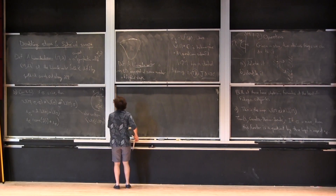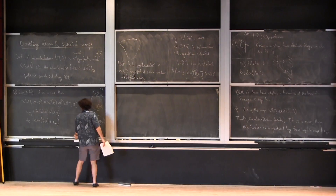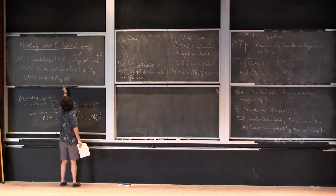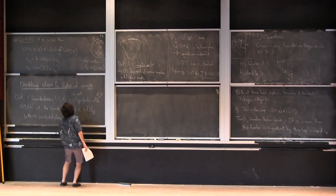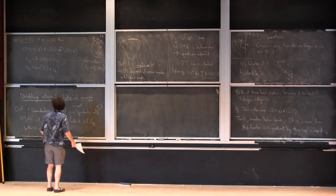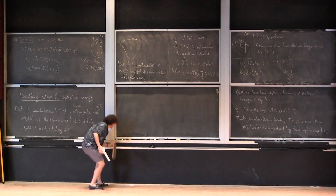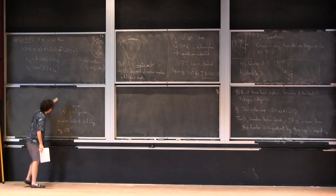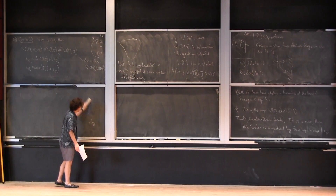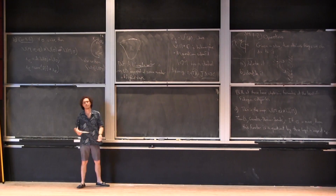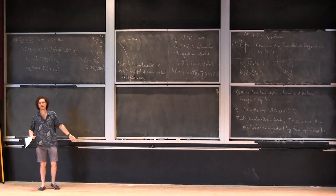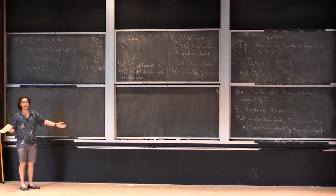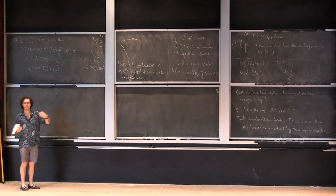So what do we have so far: we have Liouville domains, we have sectors which are Liouville domains with extra Liouville domains inside their boundary, and we have all these Fukaya categories and some ways of going from one to the other. Now let's start doing some geometry.